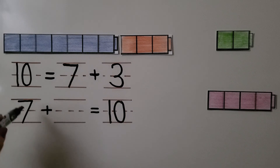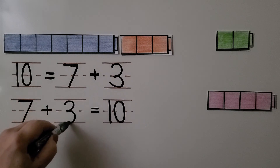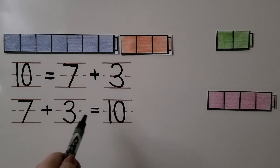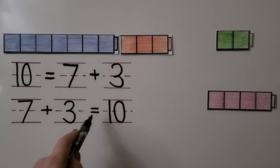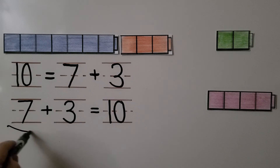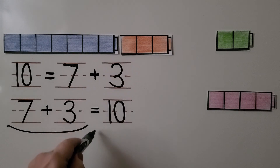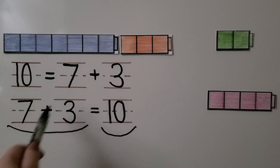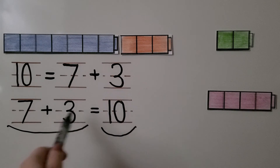We can also write seven plus three is equal to ten. We need to be careful when we count so we have the correct number of cubes. In an equation — this is an addition equation — the quantity on each side of the equal symbol is the same. We can write the equation with the sum first or last. This side is equal to ten, then we have the equal sign, and this side is also equal to ten. Both sides of the equal symbol show ten.